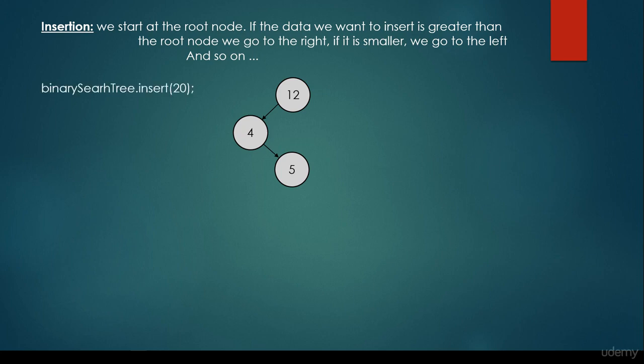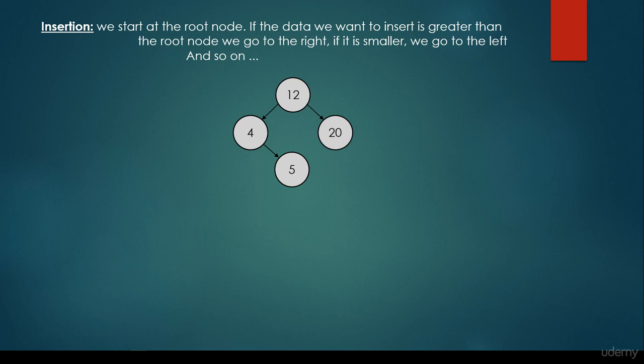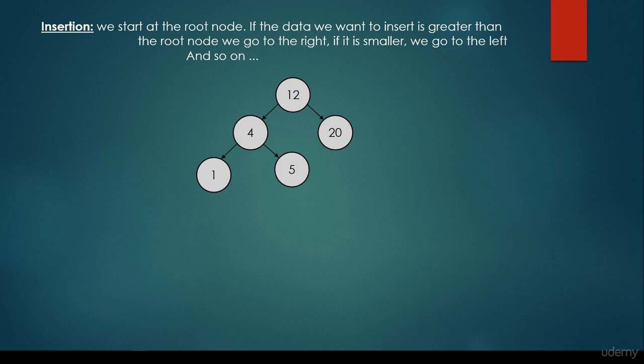What if we would like to insert 20? It's greater than 12, so we go to the right. But because 12 doesn't have any right child, the 20 is going to be its right child. What about if we would like to insert 1? It's smaller than the root node, so we go to the left. It's smaller than 4, so we go to the left, and we insert the 1 there.